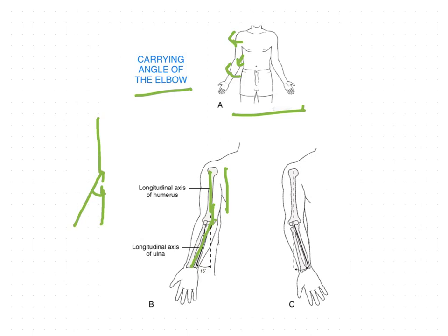The angulation seen in the frontal plane is caused by the configuration of the articulating surfaces at the humero-ulnar joint. This articulating configuration of the humero-ulnar joint produces such a kind of angulation.